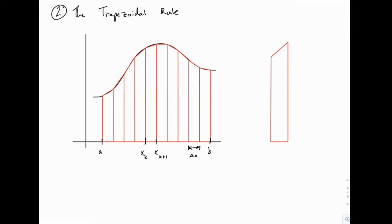For the trapezoidal rule, we basically approach the Riemann sum and say: rather than picking the left side or the right side to define the height, why don't we pick both? If we do that, we won't end up with rectangles, but we can draw trapezoids. For each sub-interval, we pick the height on the left side and the height on the right side based on the function value at each of those points, and then we draw a straight line between them. So we're basically approximating a curve using straight line segments, and you can tell from a rough picture that we can get pretty close if the function is fairly smooth. As long as there's not strange things happening, the trapezoidal rule can give very good approximations.